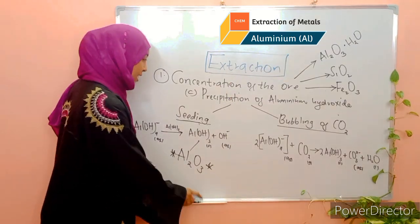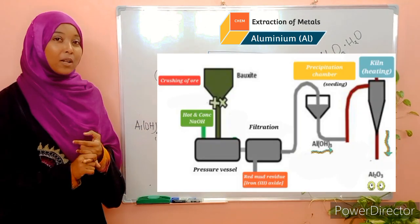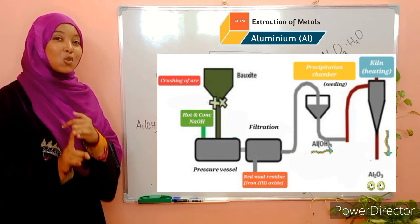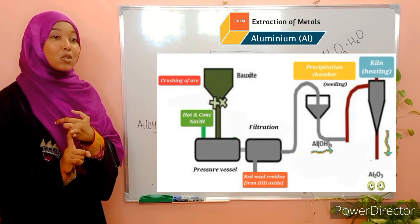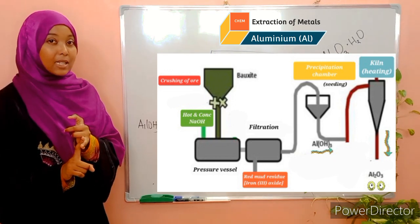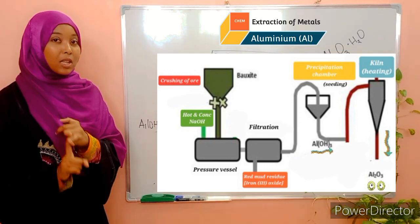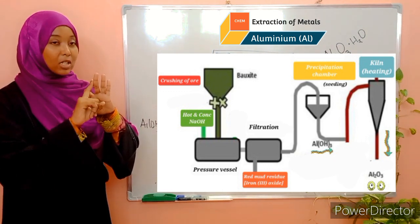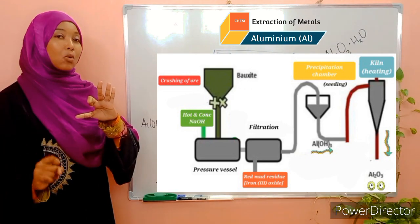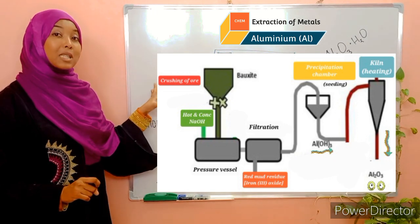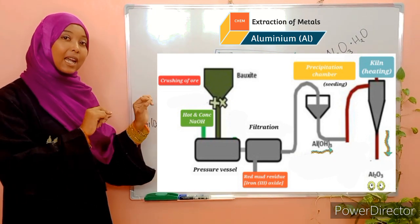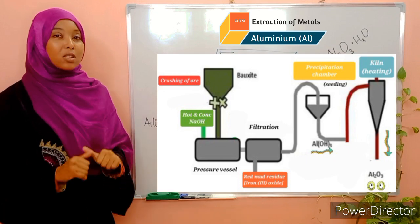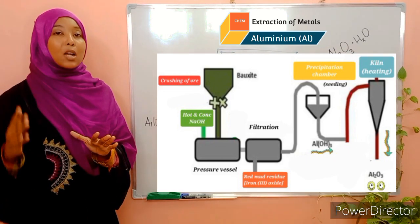To summarize the concentration steps: Step 1 — crushing of the ore into powder. Step 2 — addition of hot concentrated sodium hydroxide under pressure, which leads to the formation of sodium aluminate and sodium silicate; iron-3-oxide does not dissolve and is removed by filtration as the residue; the filtrate contains sodium silicate and sodium aluminate. Step 3 — filtration. Step 4 — precipitation of aluminium hydroxide, done by seeding or bubbling of carbon-4-oxide. Step 5 — roasting of aluminium hydroxide to form aluminium oxide.